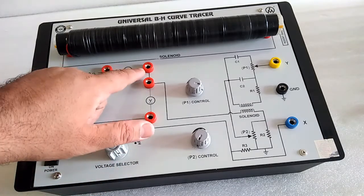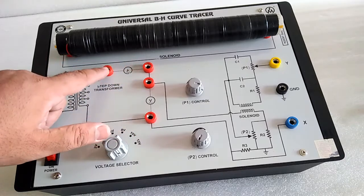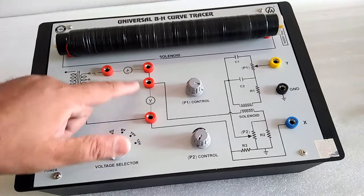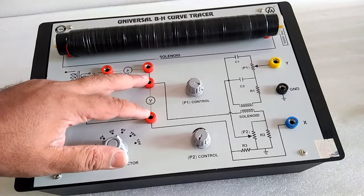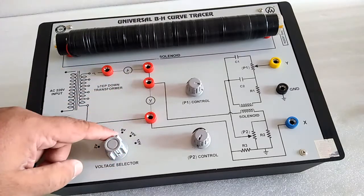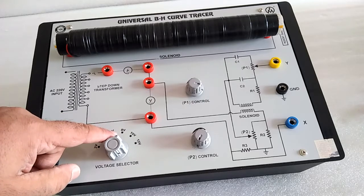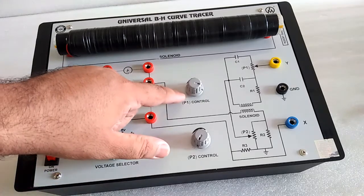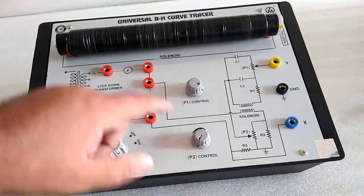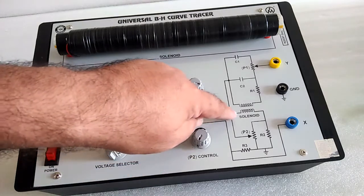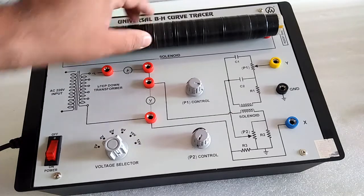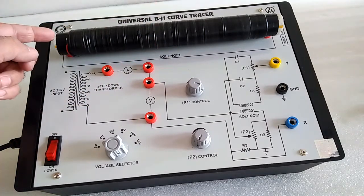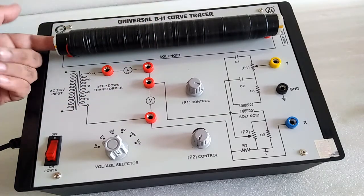Here is the 4mm socket for the current in series voltmeter. You can connect over here or use this voltage as a reading. P1 control and P2 control connect to where the solenoid is, and samples are put inside over here.